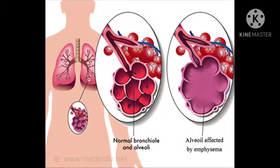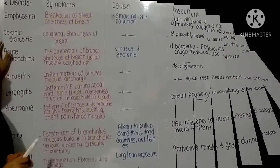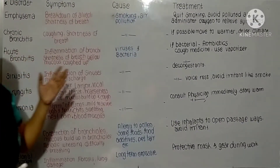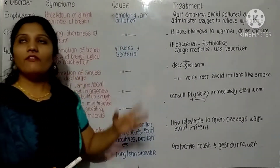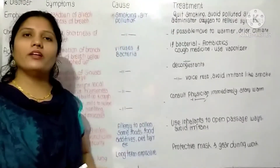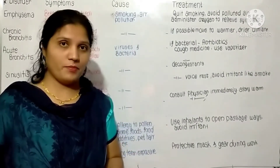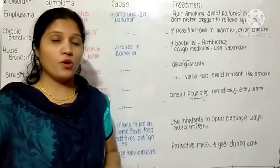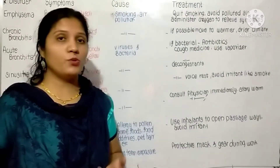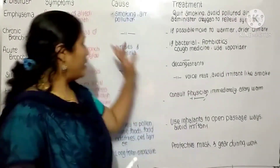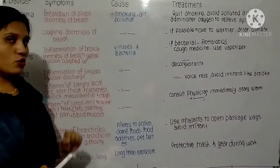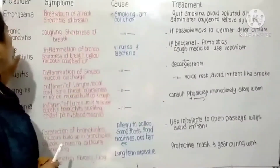Now see the difference between a normal bronchial and an affected bronchial. Whenever they show advertisements on TV related to smoking — for example, 'smoking is injurious to health' — that is when they show Emphysema. Just observe it carefully.